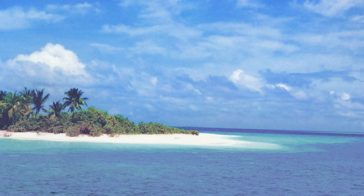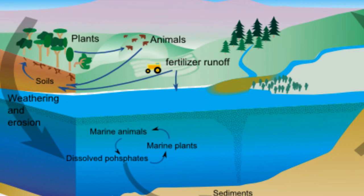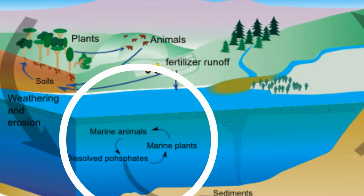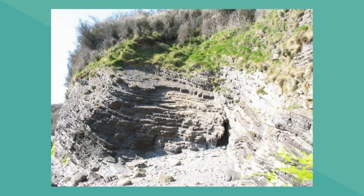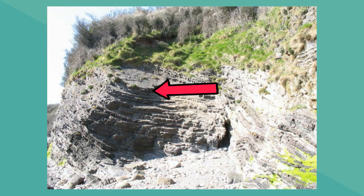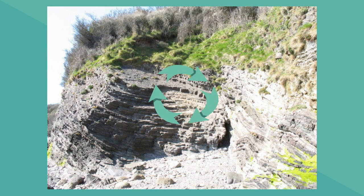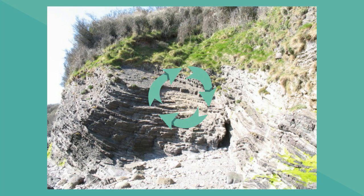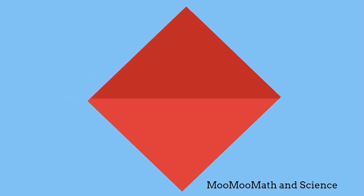Some of the phosphorus in the soil gets washed into the ocean where a similar process takes place. Plants absorb the phosphorus, animals eat the plants, and decomposers absorb the phosphorus from waste and decaying matter. Some of the phosphorus gets buried in sediment which, over time, becomes rocks and the cycle continues. That is the phosphorus cycle — another biogeochemical cycle.